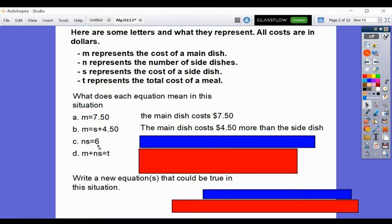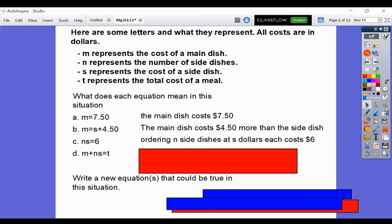Next is NS equals 6. In this case, N is the number of side dishes, and S is the cost of each of those side dishes. So we could say ordering N side dishes at S dollars each costs $6. So N times S equals 6.